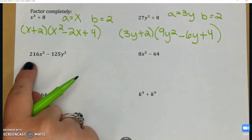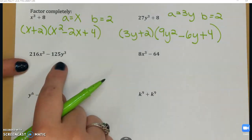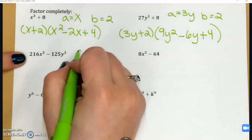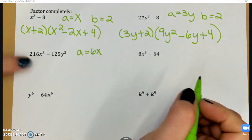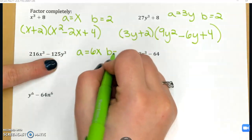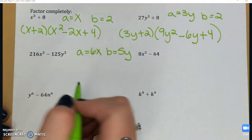Going down to the next row, I have 216x³ - 125y³. So this is a difference of cubes. So I need to identify a and b. The cube root of 216x³ is 6x, and the cube root of 125y³ is 5y. So a is 6x, b is 5y.